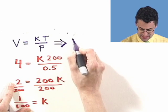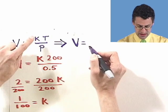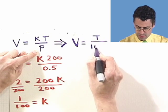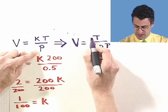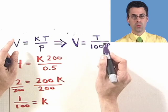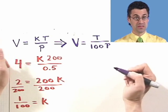Is that V equals, now I'm going to put in 1 over 100, so I'll put the 100 downstairs, T divided by 100P. See the 1 over 100 there? If you'd prefer, you can write 0.01T divided by P. They're equivalent.